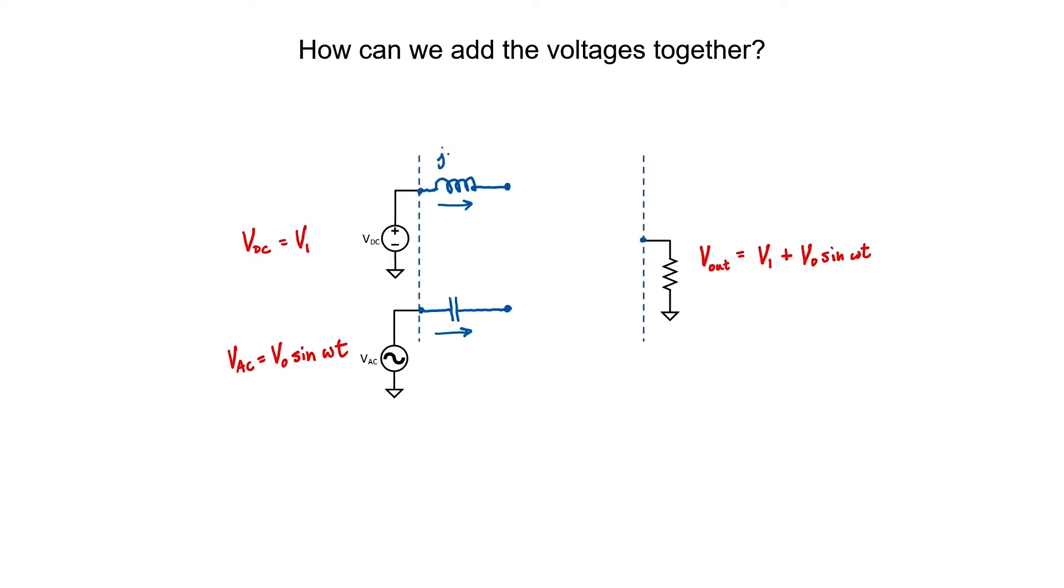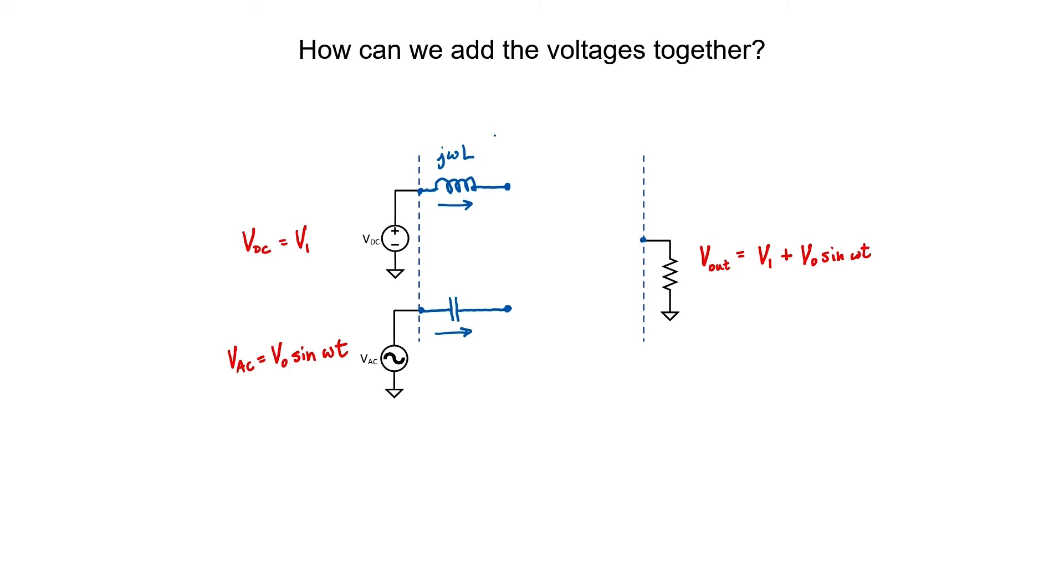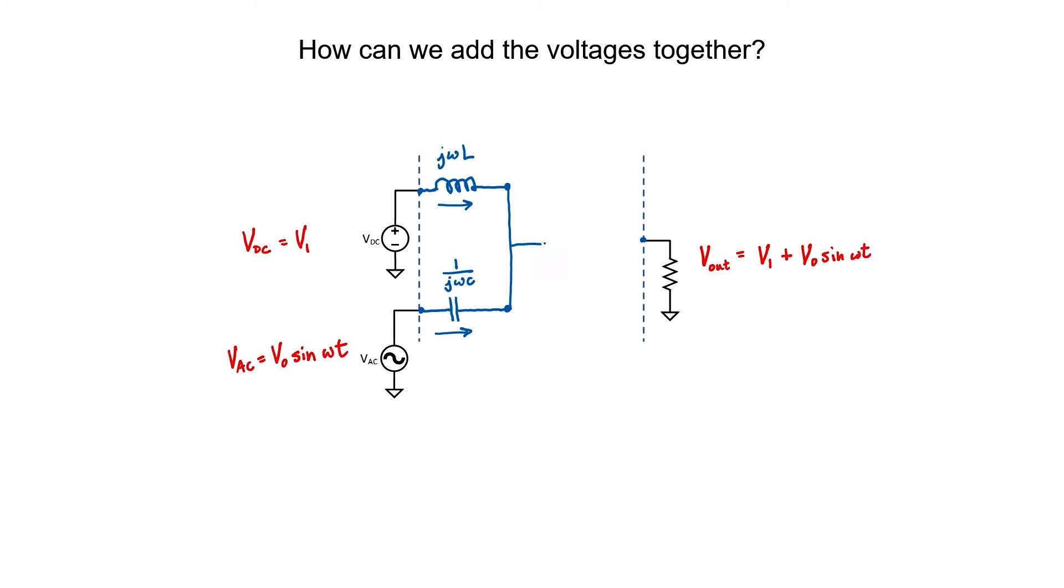The impedance of an inductor is given by J omega L, and omega is the frequency. A DC source, or a DC signal, is really like something with zero frequency. That means the impedance of an inductor is zero for a DC signal. It's like the inductor is not even there. The impedance of a capacitor, as you might recall, is one divided by J omega C. If the frequency is high enough, then the impedance gets smaller and smaller. That means that an AC signal with a high enough frequency can get right through that capacitor. A DC signal, though, will experience an infinite amount of impedance.